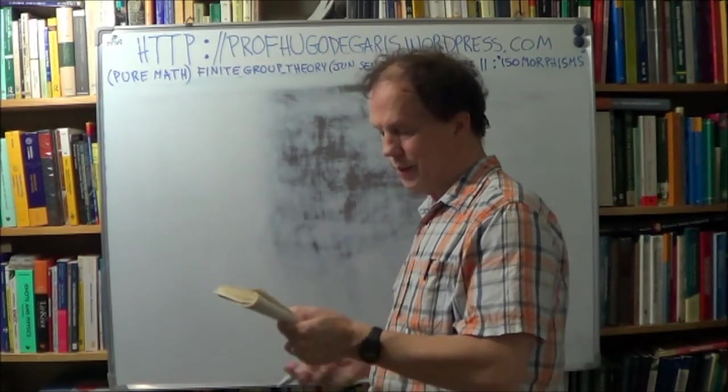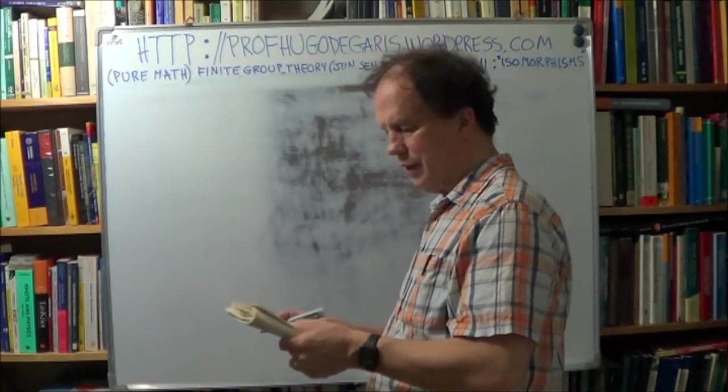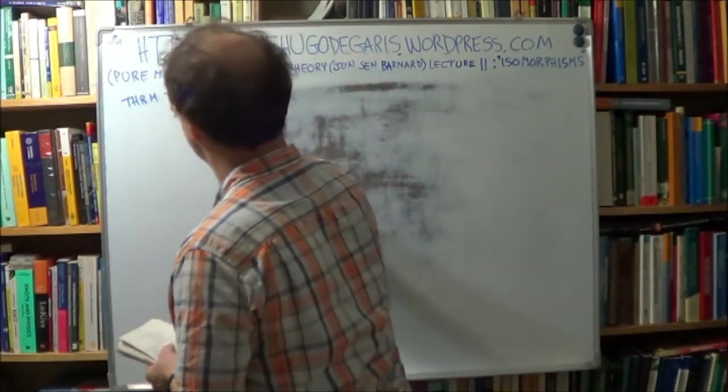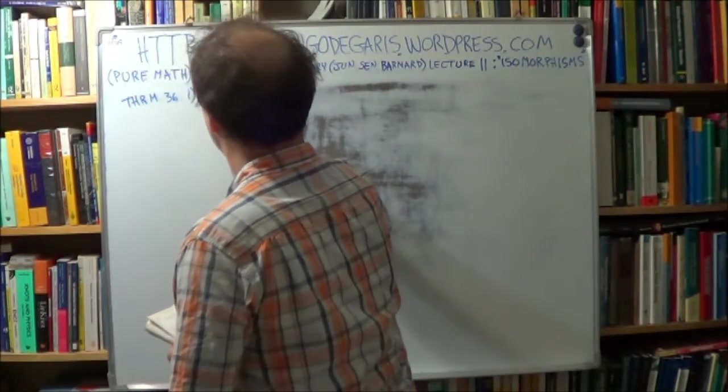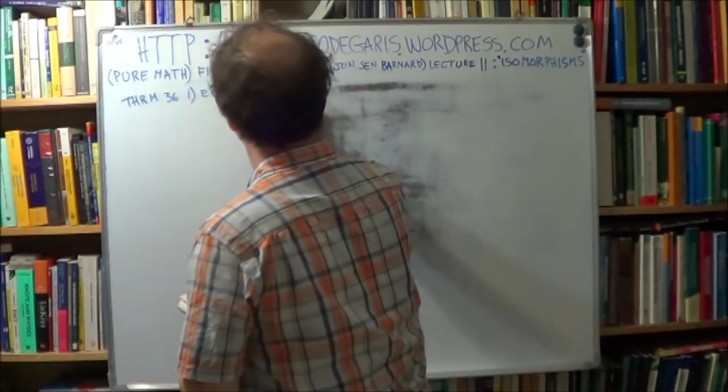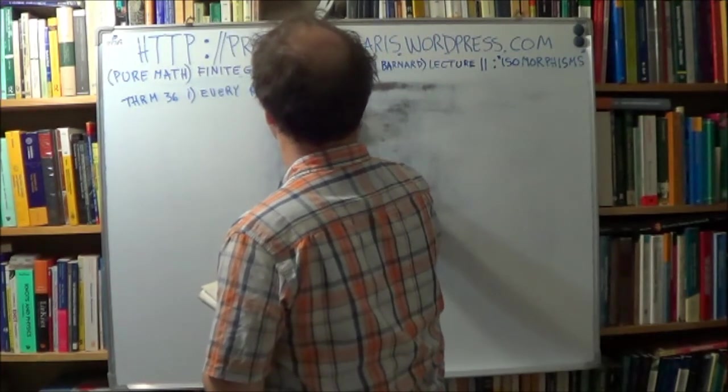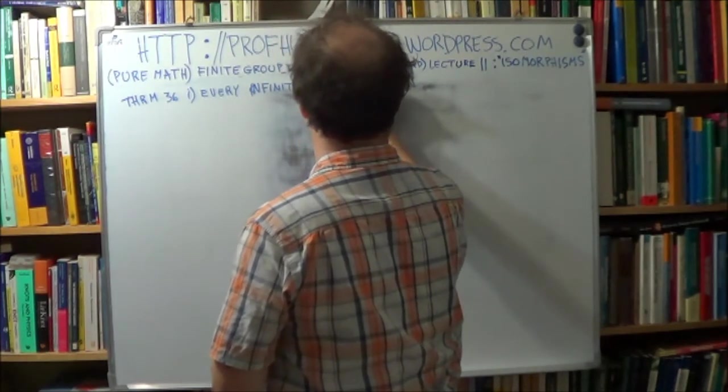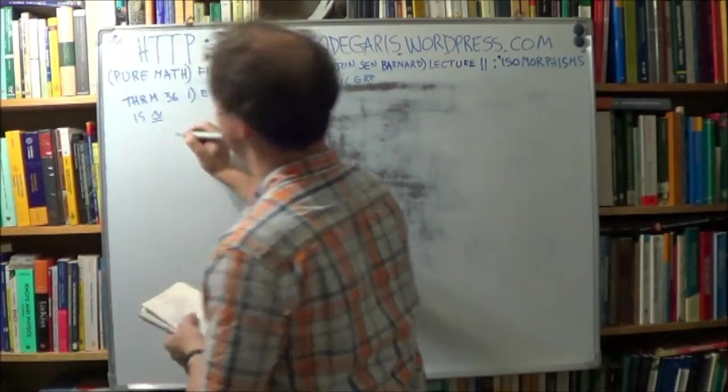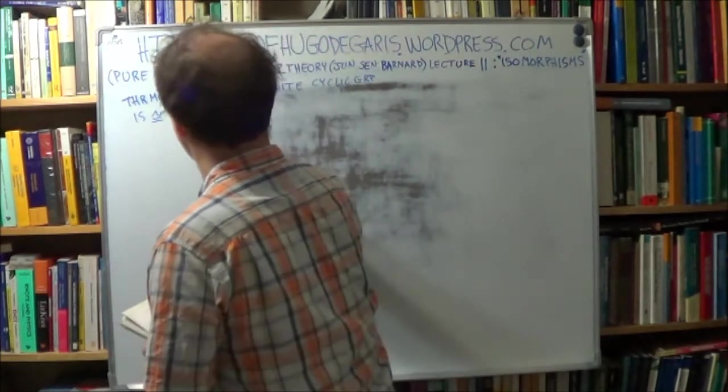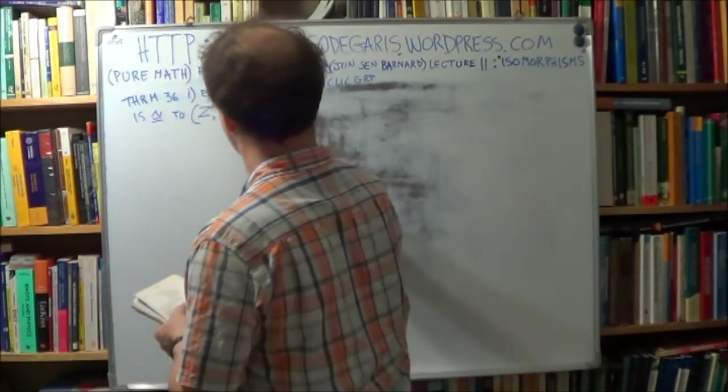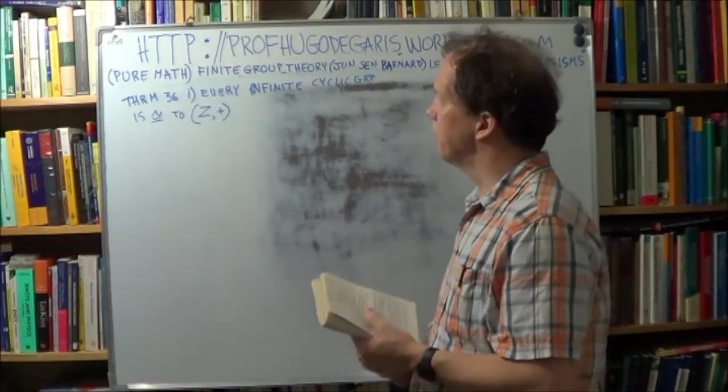Alright, so theorem 36 says every infinite cyclic group is isomorphic, remember this sign, isomorphic to the group, the set of integers with binary operation plus. Okay, that's what we have to prove.